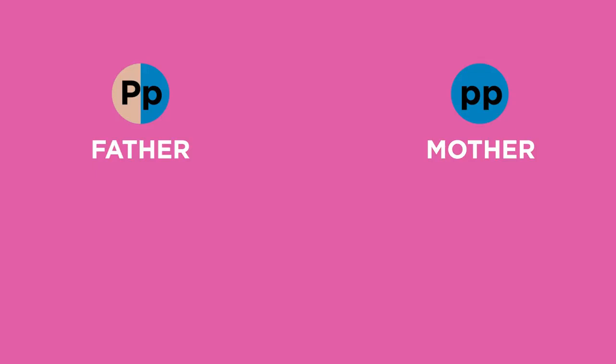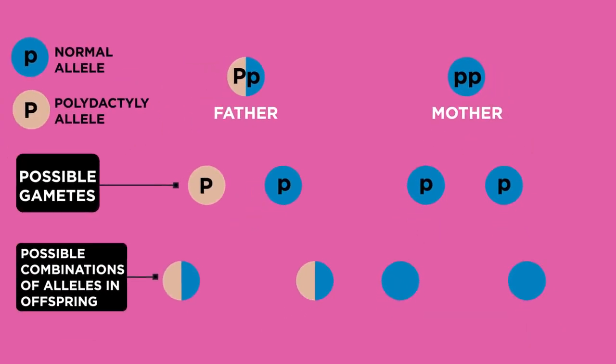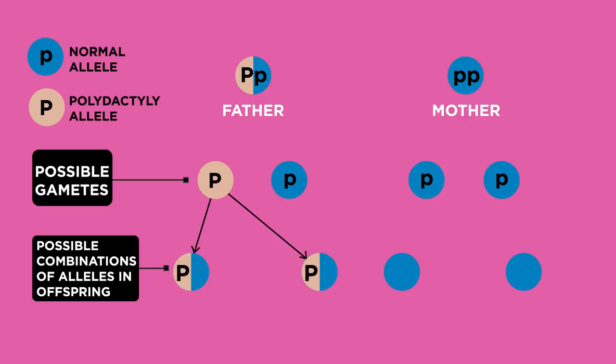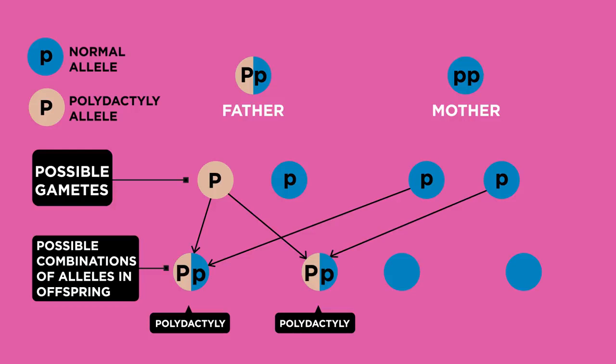In an example, the father has a copy of this allele but the mother does not. We can show this using a genetic diagram. Offspring with one dominant allele big P and one recessive allele little p will also have the condition, whereas these offspring won't have the condition.